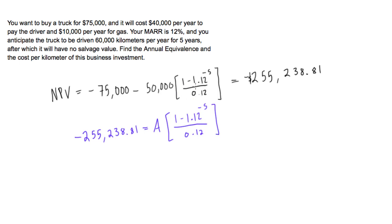You calculate this - it's the same as in the previous part - and divide from both sides. We find that A here, this annuity, which is actually the annual equivalence (so we can say AE equals A), is going to give us negative $70,805.73.